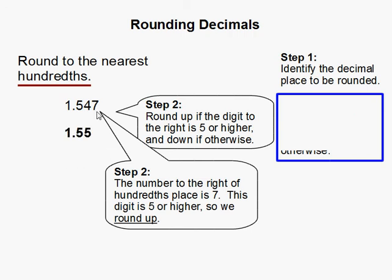That means the 7 drops off, and the 4 becomes a 5. Now if we were to round down, the 7 would drop off, and the 4 would remain the same.